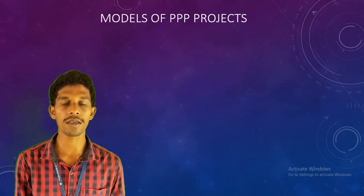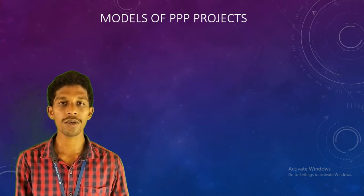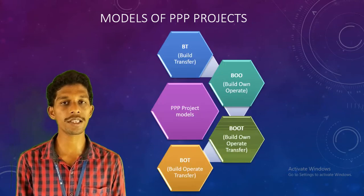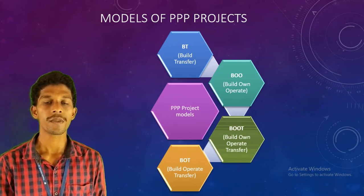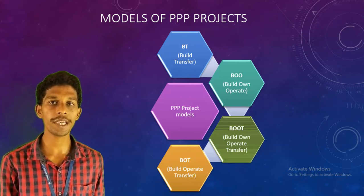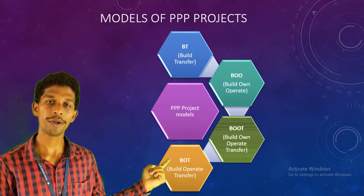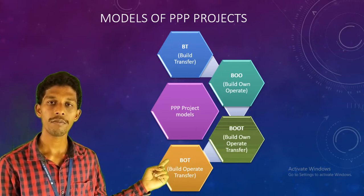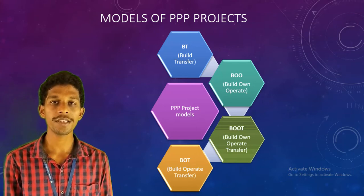When you see the outside world, most of the projects we can see — like flyovers, multi-storied buildings, road networks. How is the project undertaken? What type of delivery method are they using? There are basically four different delivery modules in PPP projects. The first one is BT — Build and Transfer. The second is BOO — Build, Own, Operate. The third is BOOT — Build, Own, Operate, Transfer. And the fourth is BOT — Build, Operate, Transfer.